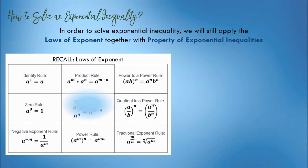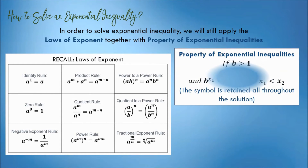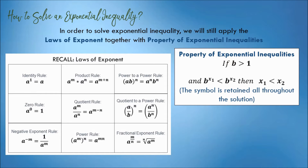Remember the laws of exponents and this property. For exponential inequality, if b is greater than 1, and b raised to x sub 1 is less than b raised to x sub 2, then x sub 1 is less than x sub 2. It only means that the inequality symbol is retained all throughout the solution.